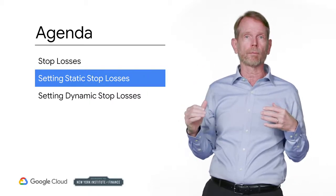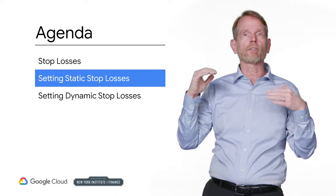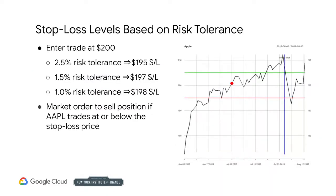So when your trade doesn't go as planned, how do you decide where to exit? There are two types of stop losses. The first is static, the second is dynamic. You can set a stop loss statically based on where you enter the trade. Suppose you enter at 200. If you can tolerate a 2.5% loss, then your stop loss should be at 195. If you can only tolerate a 1.5% loss, your stop loss should be at 197. If you were very risk averse, you might only tolerate a 1% loss, then your stop loss would be 198. Ideally, you want to stop out where the loss is within your risk tolerance. To do so, you may place a stop loss order with your broker. Suppose you place a stop loss order at 195 — then if the stock trades at or below that price, your broker enters a market order to sell and you exit your trade.